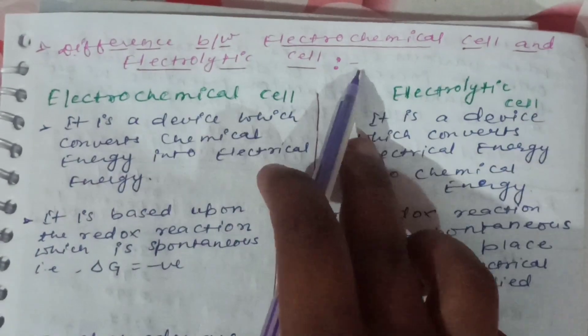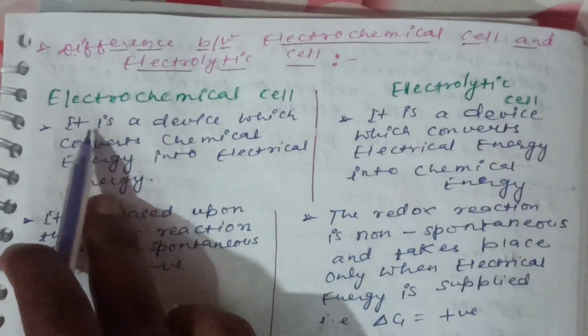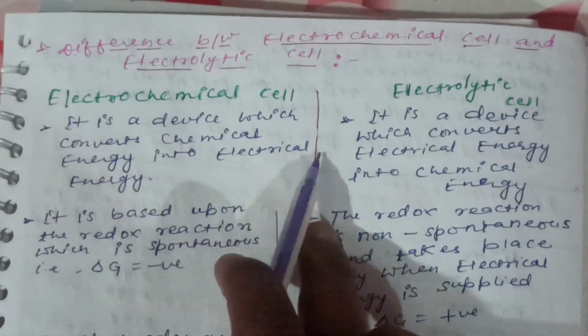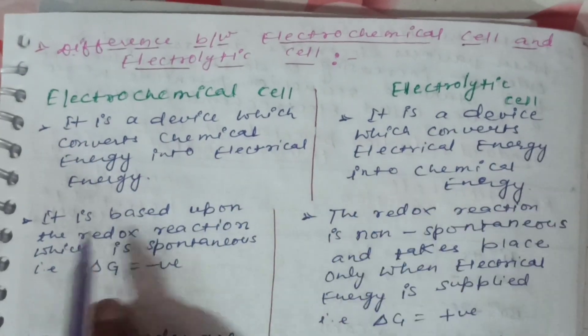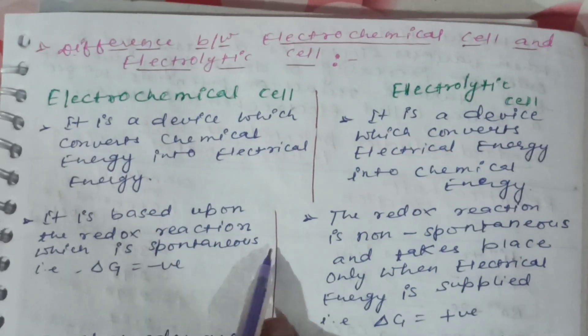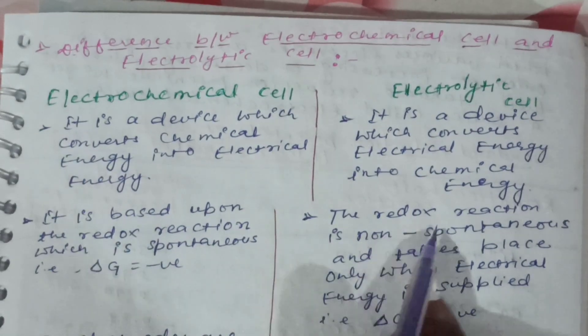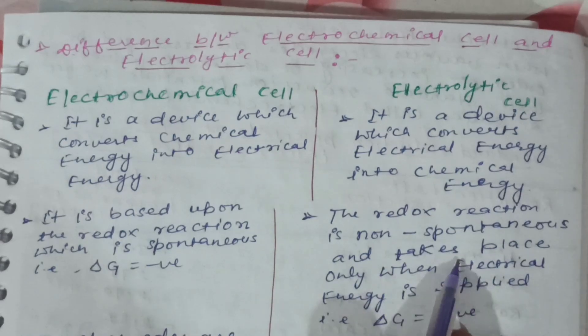The difference between electrochemical cells and electrolytic cells. Electrochemical cells: it is a device which converts chemical energy into electrical energy. It is based upon redox reactions which is spontaneous, that is ΔG is equal to negative. Electrolytic cells: it is a device which converts electrical energy into chemical energy. The redox reaction is non-spontaneous and takes place only when electrical energy is supplied, that is ΔG is equal to positive.